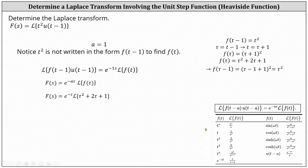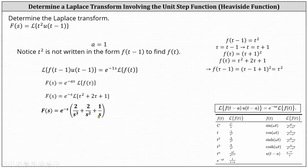Using our table, the Laplace transform of tau squared is equal to two divided by s cubed, the Laplace transform of two tau is equal to two divided by s squared, and the Laplace transform of one is equal to one divided by s. This indicates the Laplace transform is equal to e to the power of negative s times the sum of two divided by s cubed, two divided by s squared, and one divided by s. I hope you found this helpful.